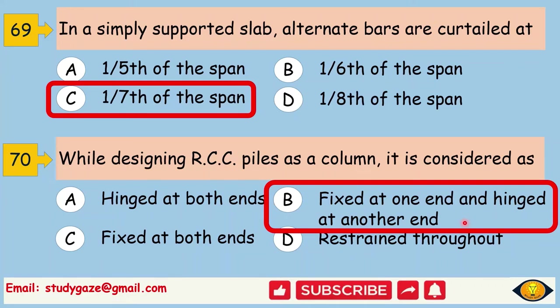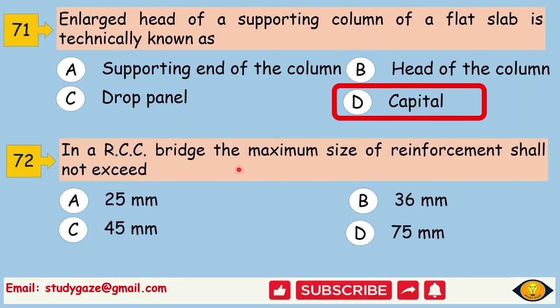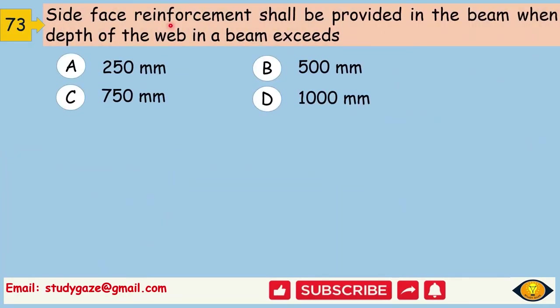Enlarged head of a supporting column of a flat slab is technically known as capital. In a RCC bridge, the maximum size of reinforcement shall not exceed. Answer is 45 mm. Side face reinforcement shall be provided in the beam when depth of the web in a beam exceeds. Answer is 750 mm.